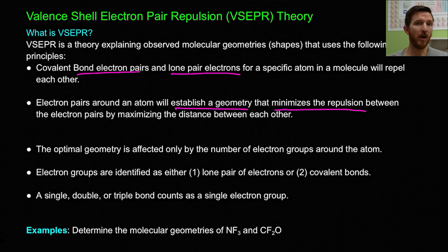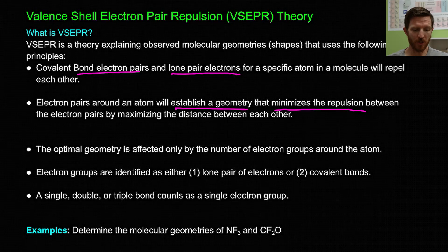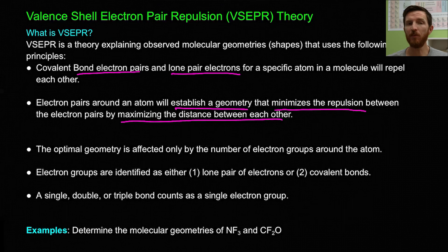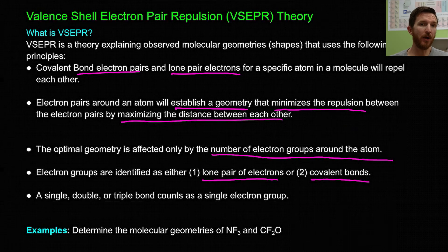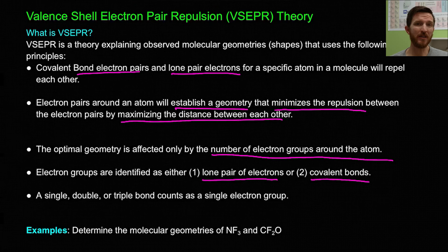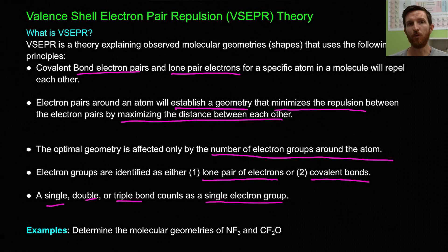Whether that is a group of electrons sitting in a lone pair orbital or the pairs of electrons in between atoms in a covalent bond — kind of in between the space of the nuclei between those two atoms — they're going to orient themselves to maximize the distance between them, which minimizes repulsion. The optimal geometry is predicted by the number of electron groups: a lone pair on an atom or a set of covalent bonds. Because a single, double, or triple bond all go in the same direction between two atoms, we consider a single, double, or triple bond as a single electron group.